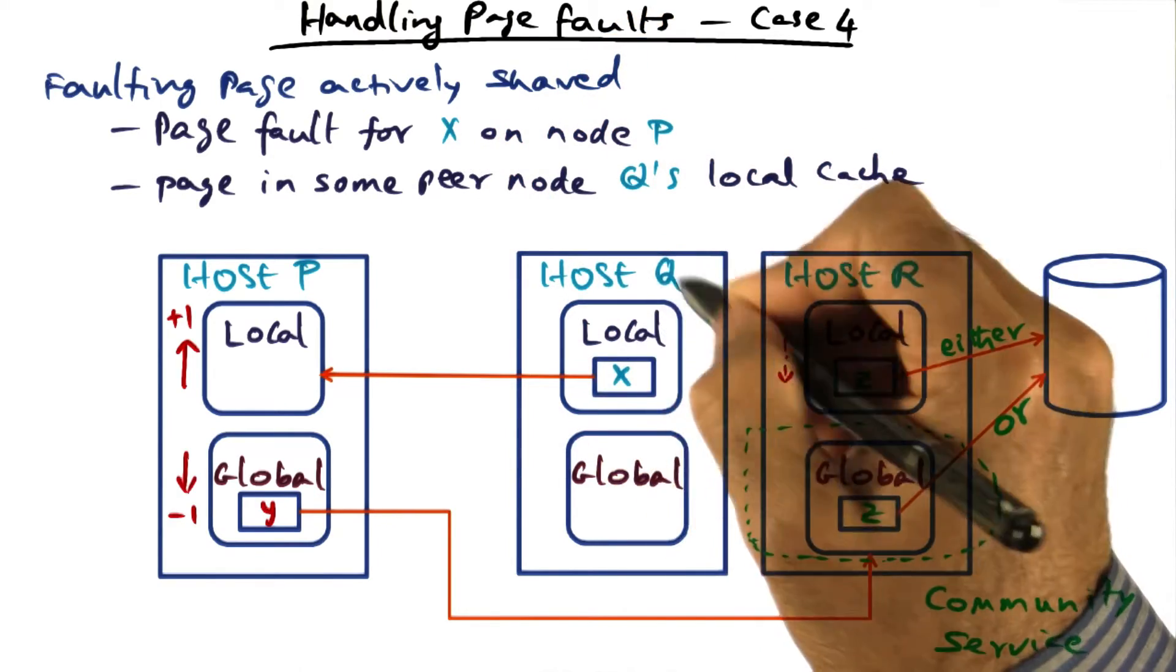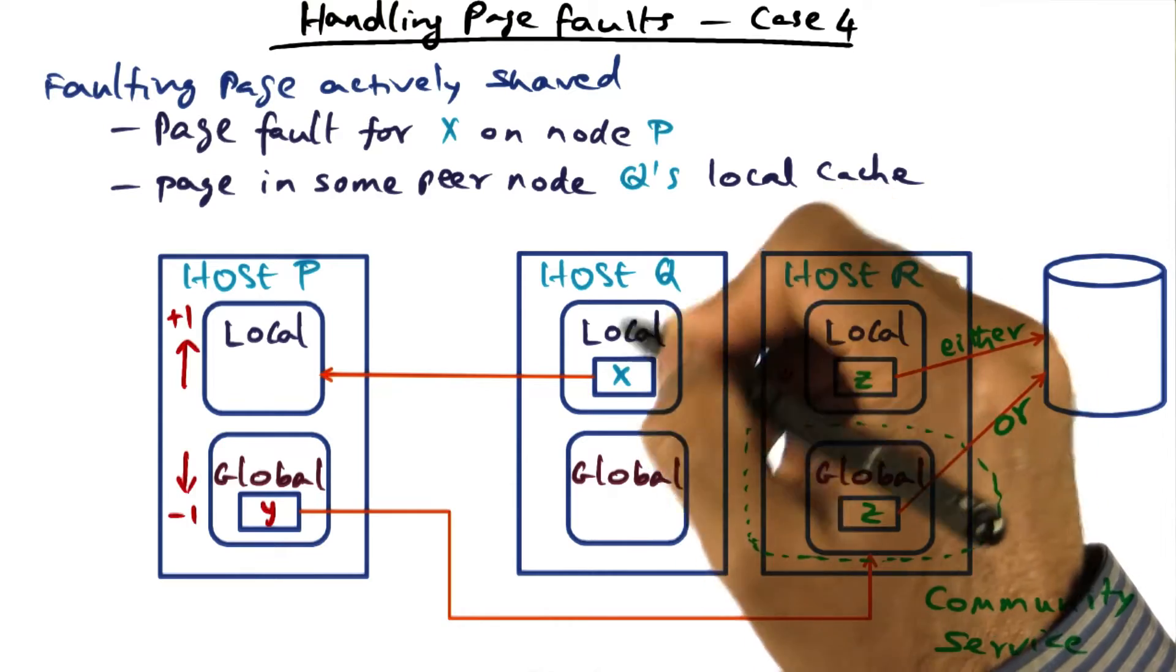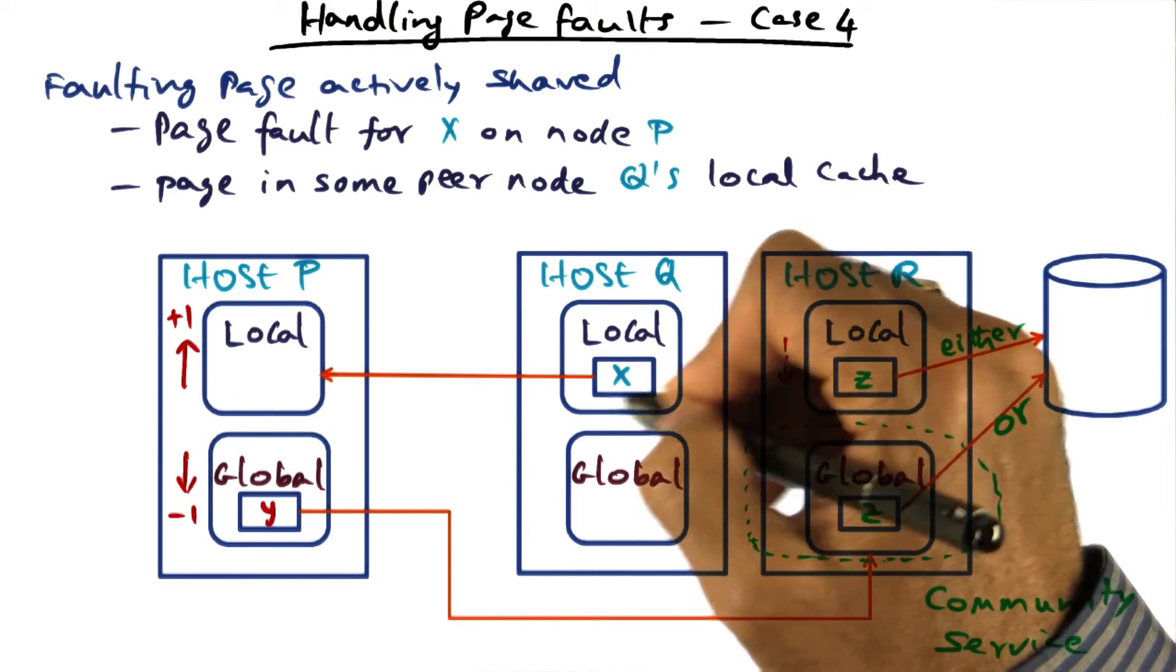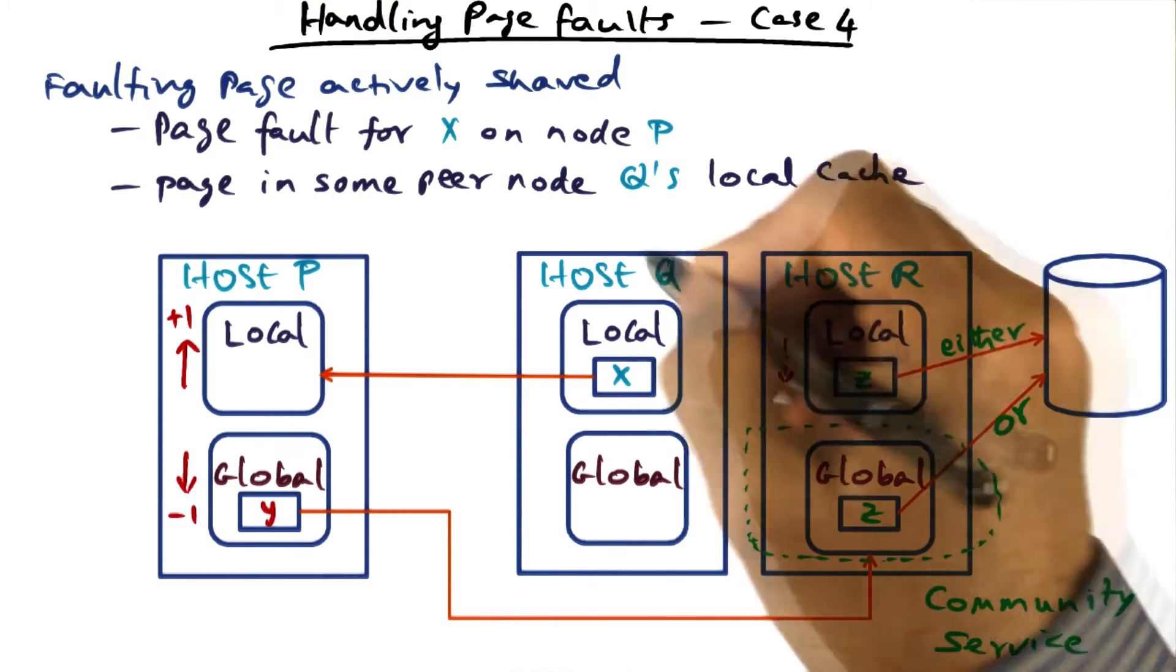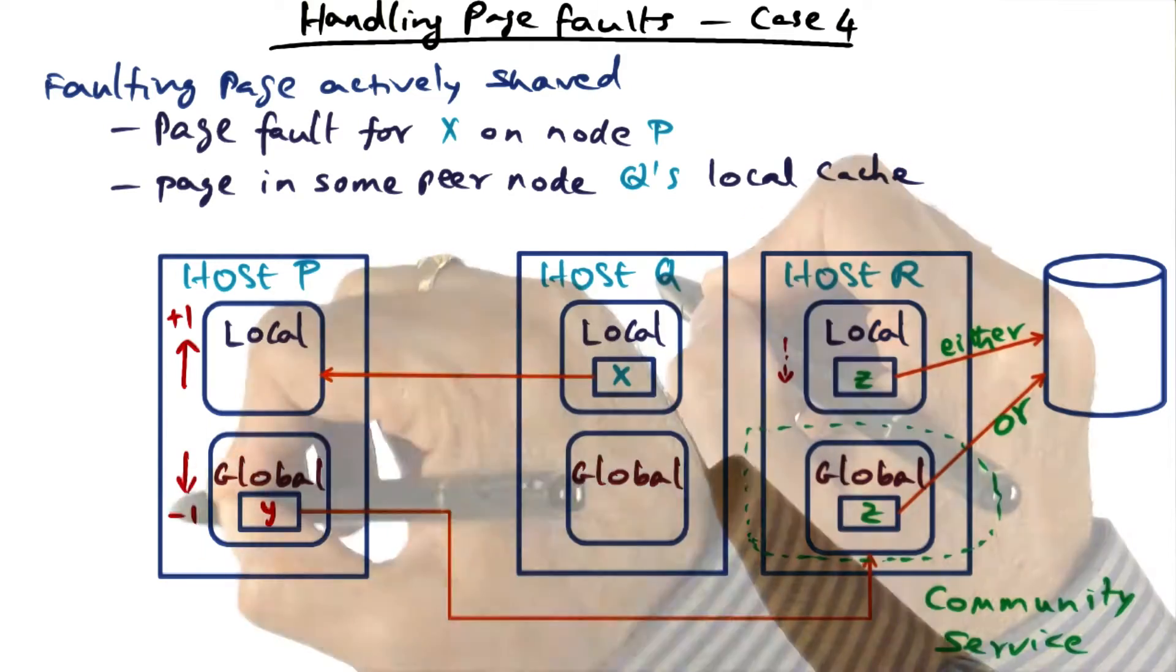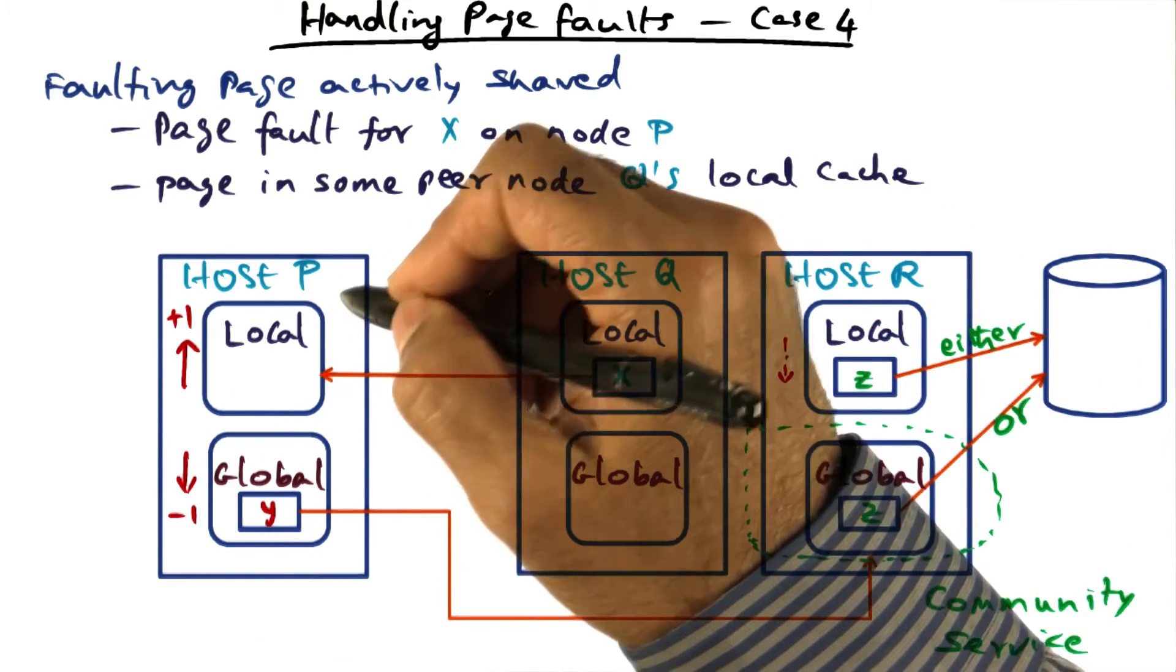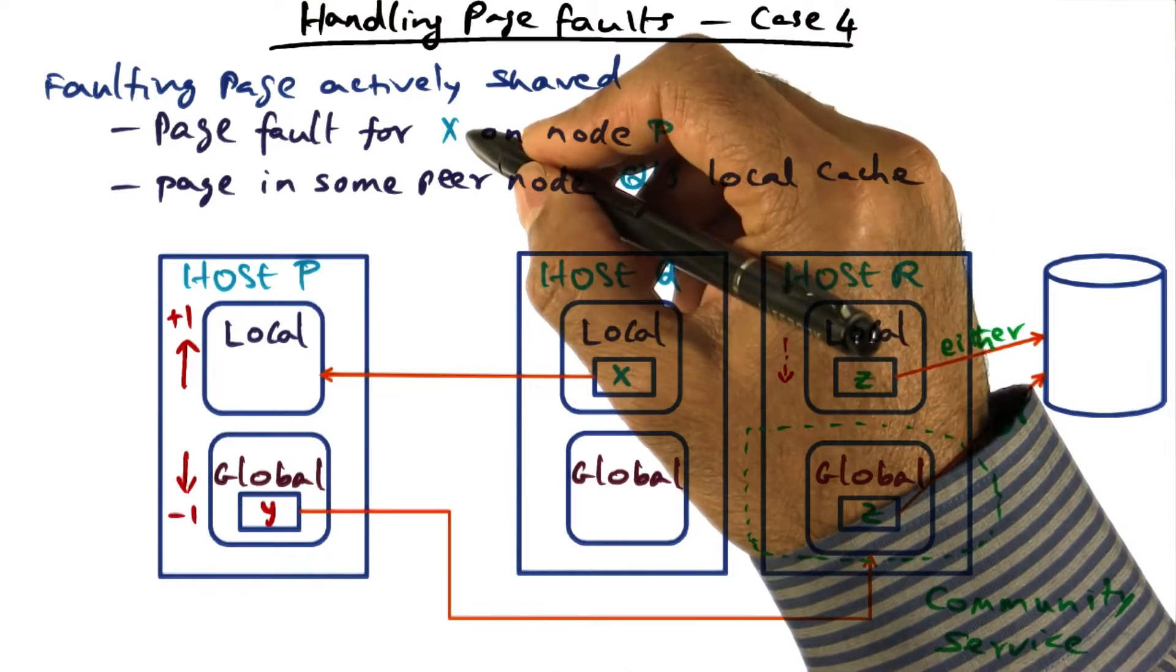And currently, some process on host Q is using that page X, so it is in the local part, in the working set portion of host Q. On host P, the process is page faulting on the same page X.